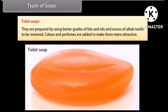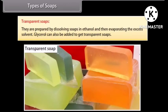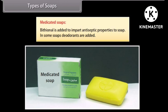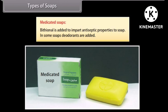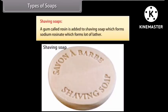Types of soaps: there are different types of soaps depending upon ingredients. Toilet soaps are prepared by using better grades of fats and oils — excess alkali is removed and colors and perfumes are added to make them more attractive. Transparent soaps are prepared by dissolving soaps in ethanol and then evaporating the excess solvent; glycerol can also be added — they are used for dry skins. Medicated soaps have bithionol added to impart antiseptic properties; some soaps also have deodorants added. Shaving soaps contain a gum called rosin, which forms sodium rosinate and produces a lot of lather; glycerol is also added to prevent drying.